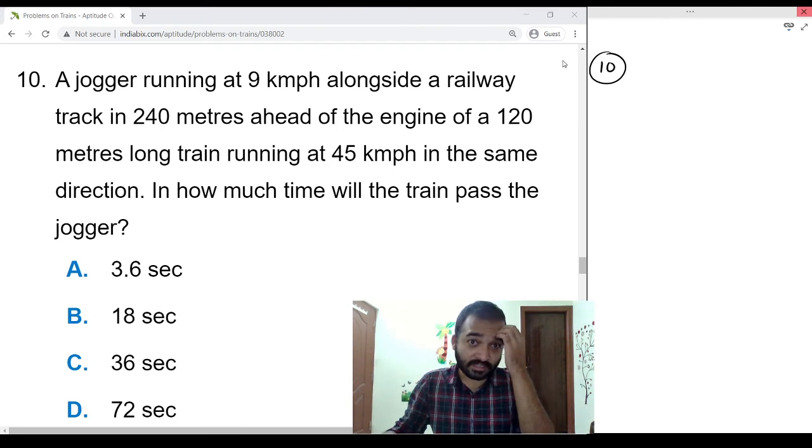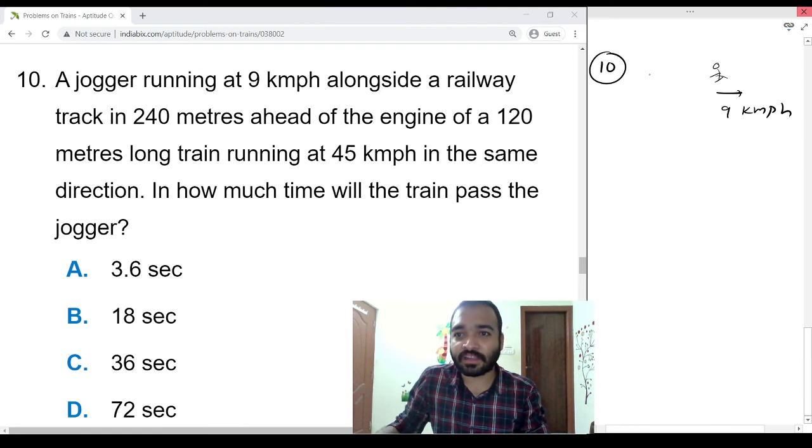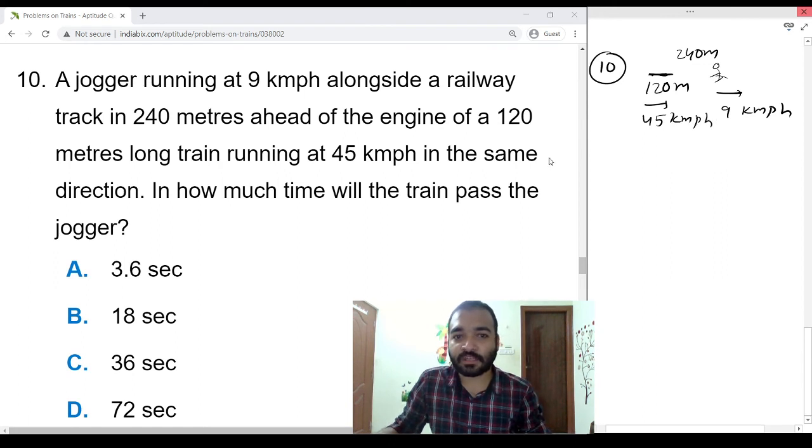A jogger running at 9 km/h alongside a railway track. The jogger is there, he is running at 9 km/h speed along a track, 240 meters ahead of the engine. The engine is there, the distance gap between the engine and the person is 240 meters. Engine length is 120 meters long, running at 45 km/h in the same direction. This is also in the same direction. How much time will the train pass the jogger?